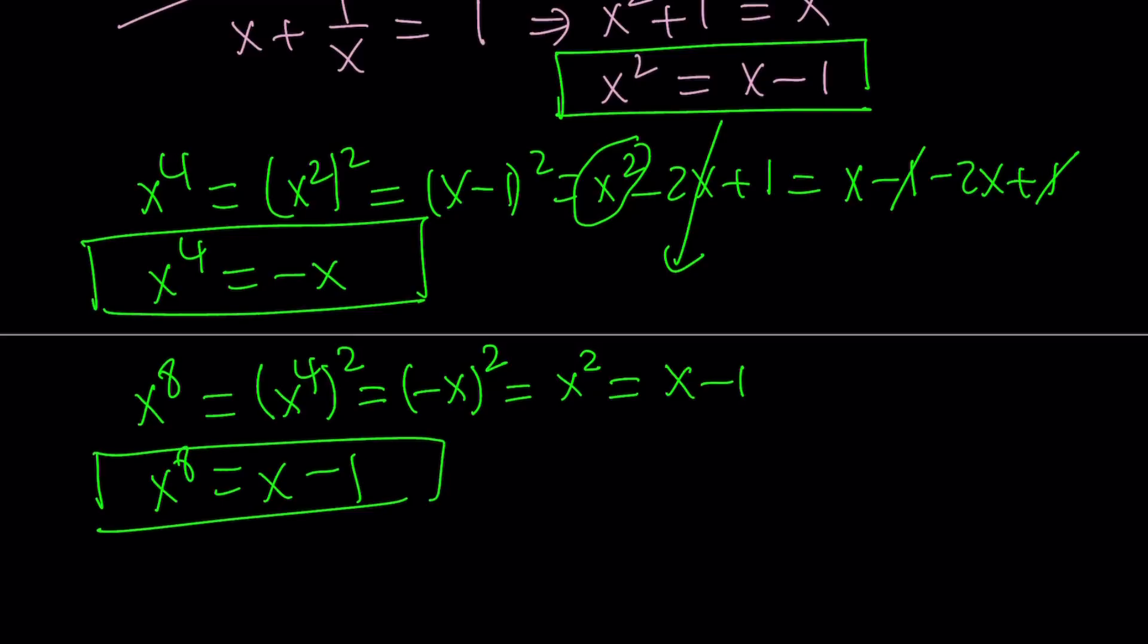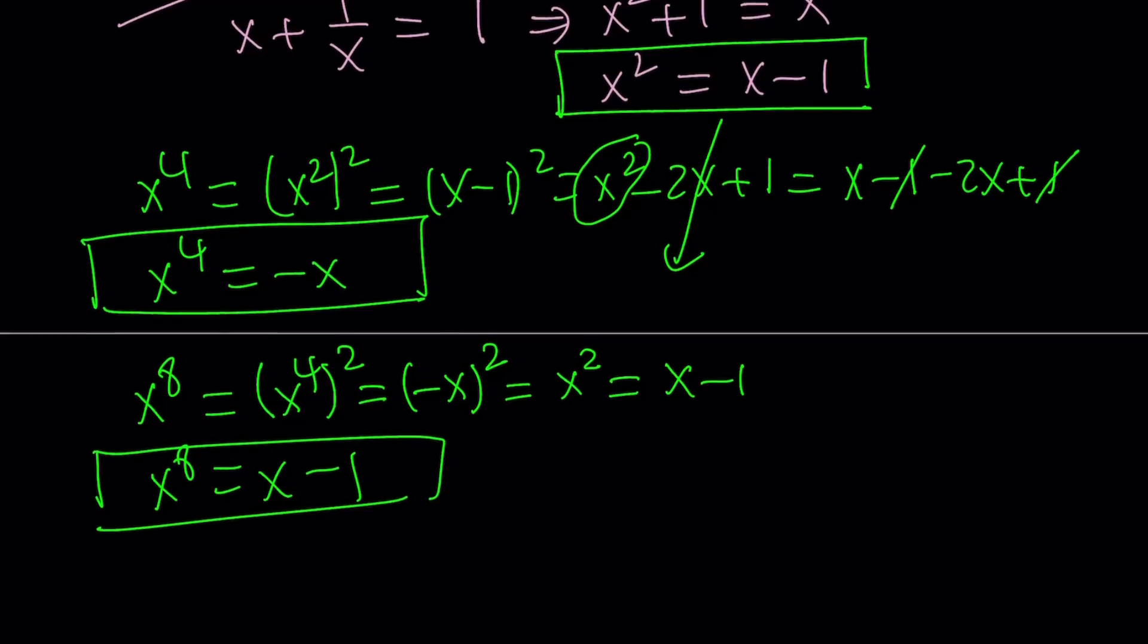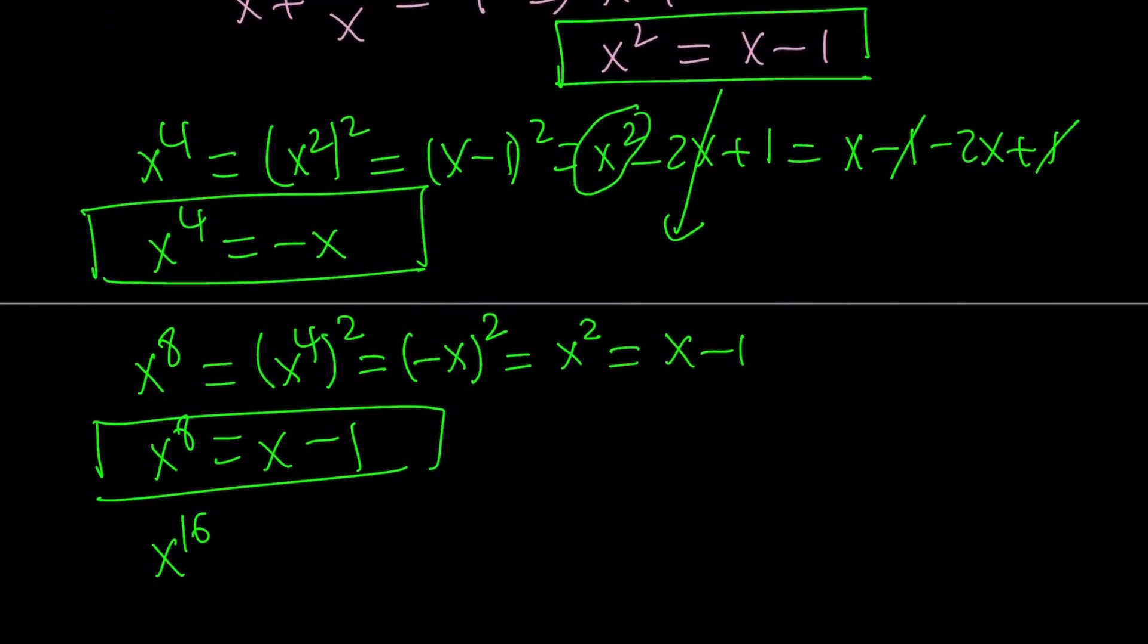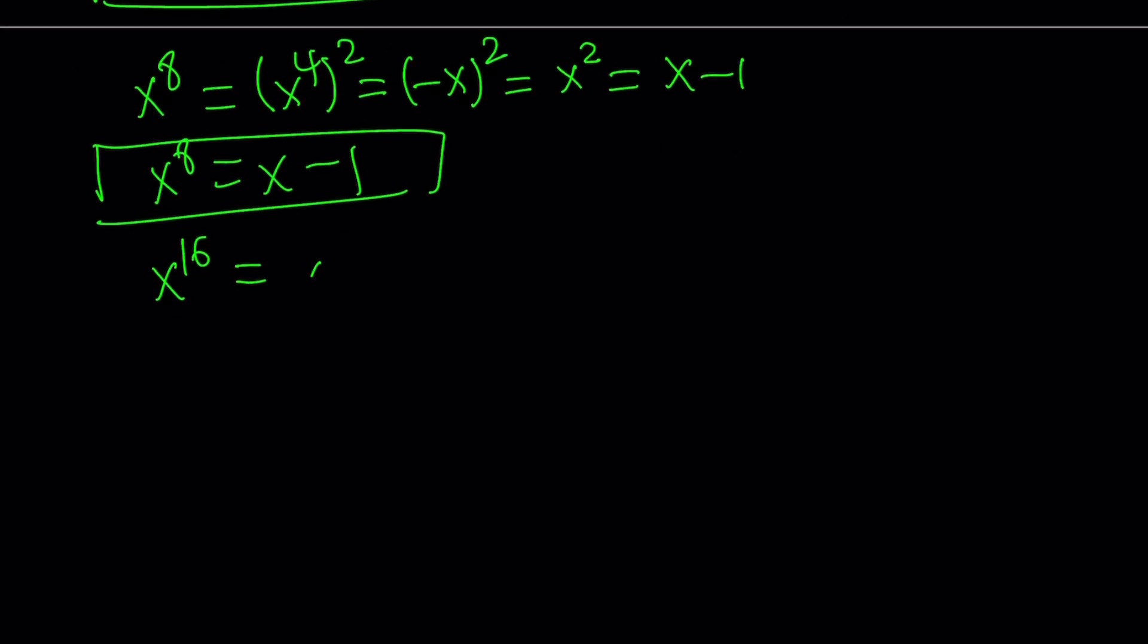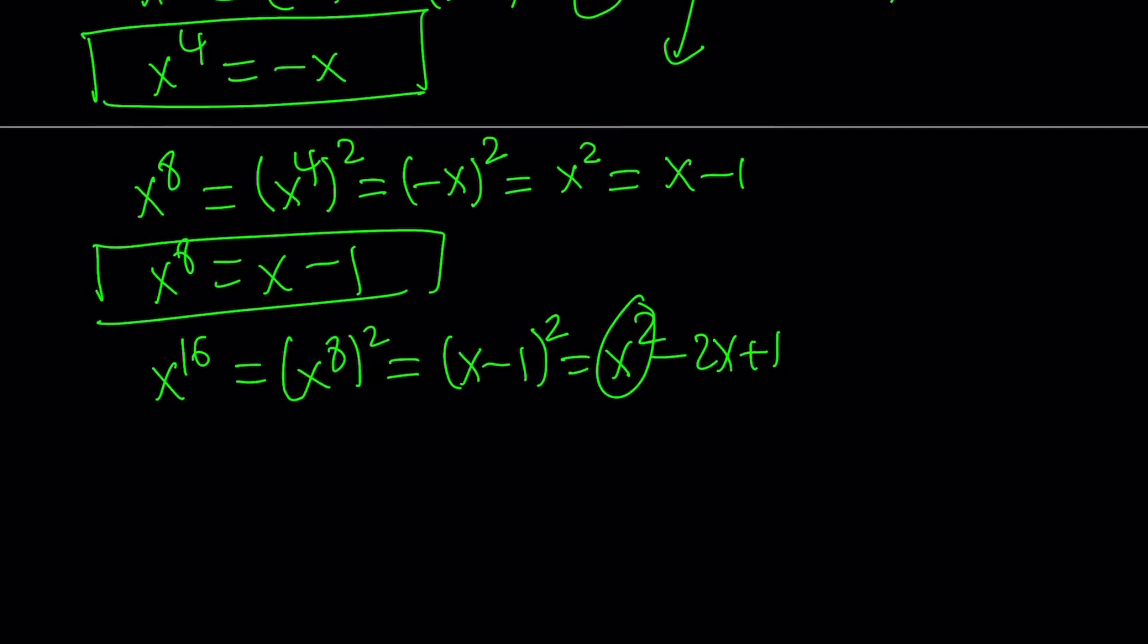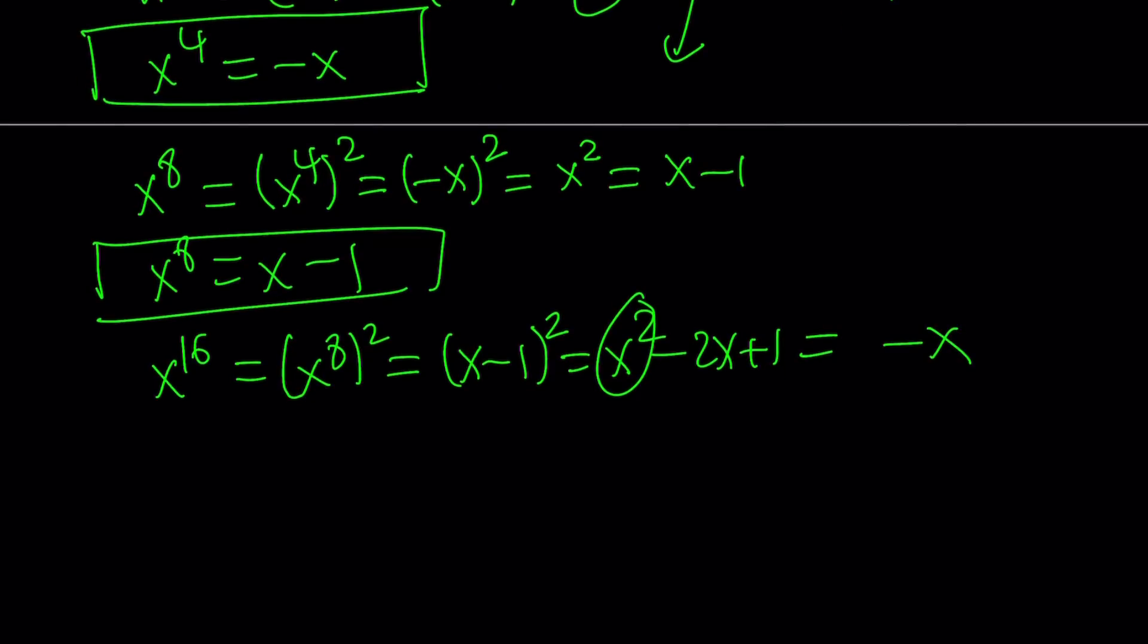Let's proceed in this manner, but notice that a pattern is emerging. To find out x to the power of 16, I'm going to take x to the 8th and square it. But x to the 8th can be written as x minus 1. So I'll square it. And that's going to give me pretty much the same thing as before. And x squared can be replaced. So we basically repeat the process, and it ends up giving us negative x.